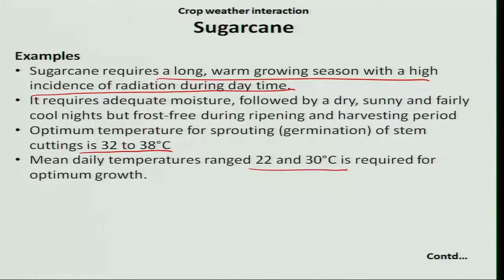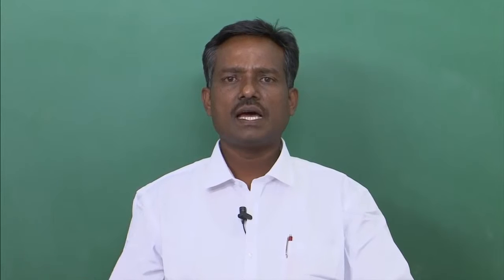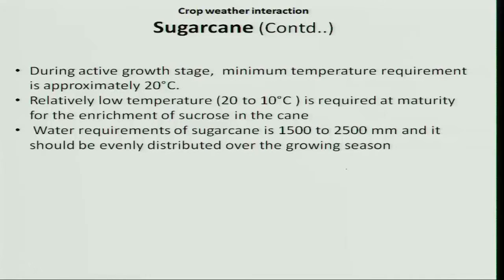The base temperature for different growth stages — shoot emergence, tillering, and internode elongation — is 12, 14, and 18 degree Celsius respectively. The base temperature is the threshold below which the plant cannot grow and all activity is stopped. Let us now see the maturity phase or the ripening phase.